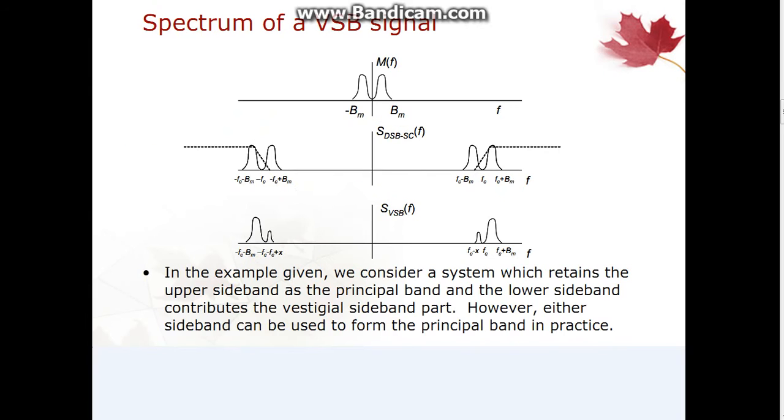Basically, here we are showing the spectrum of a VSB signal. The first figure shows the message spectrum which has bandwidth from minus BM to BM. Now in the second figure, lower sideband and upper sideband both are shown in case of the DSB-SC signal. But here we are describing the concept of vestigial sideband suppressed carrier. In the example given, we consider a system which retains the upper sideband as the principal band and the lower sideband contributes the vestigial sideband part. However, either sideband can be used to form the principal band in practice.